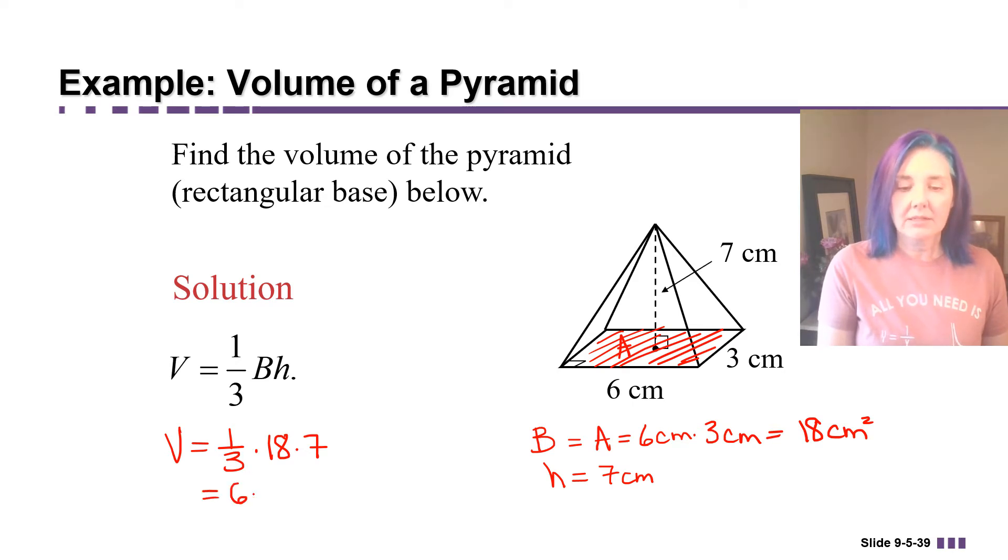That's going to be 6. So that's 6 times 7 or 42. And what would the units be? Well, units in volume are always cubed, right? So if these are centimeters, we're going to have cubic centimeters. 42 cubic centimeters is the volume of this pyramid.